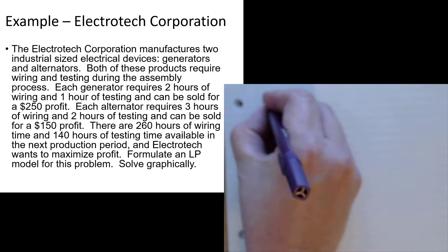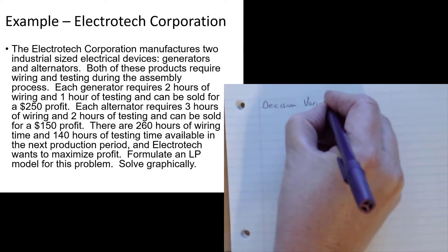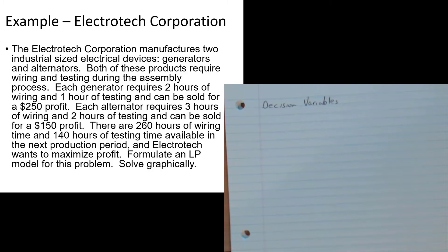The first step is we need to find out what the decision variables are. When I'm reading that question, I'm going to be thinking in terms of what is it that I want to know that I don't already know. Next, I'm going to be thinking about what's my objective function - what am I maximizing, what am I minimizing? And the third thing I'll be thinking about is what are my constraints, what are my limitations?